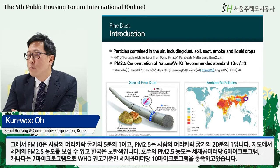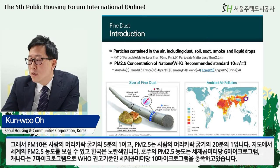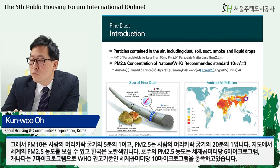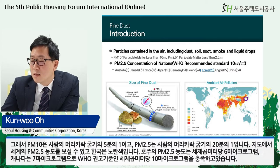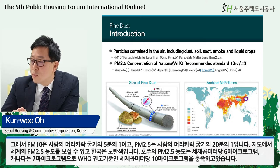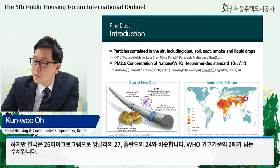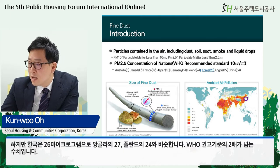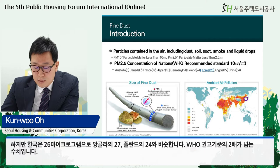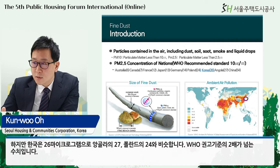Looking at the concentration of PM2.5 around the world, you can see the map — Korea is shown in yellow. The PM2.5 concentration of Australia is 6 micrograms per cubic meter, and Canada is 7, which satisfies the WHO's recommended standard of 10 micrograms per cubic meter. However, South Korea is 26, similar to Angola's 27 and Poland's 24 — more than double the WHO's recommended standard.